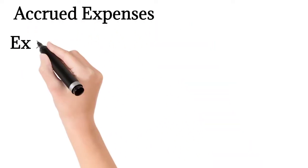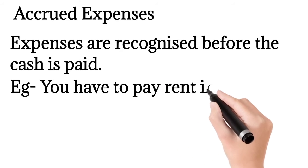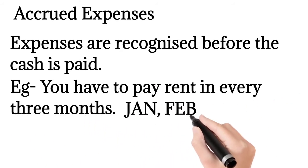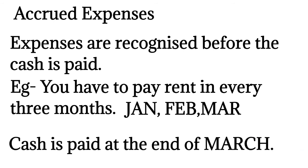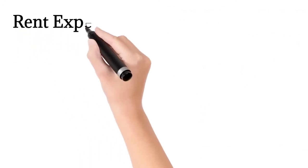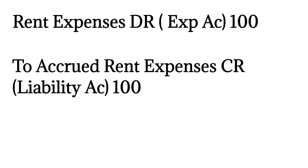Accrued expenses are recognized before the cash is paid. For example, you have to pay rent for three months — January, February, and March — and the cash is paid at the end of March. So for January, February, and March, you initially need to accrue the rent expense, and then it has to be paid.